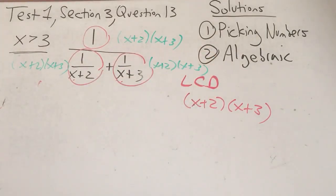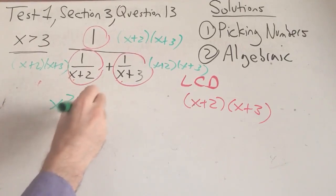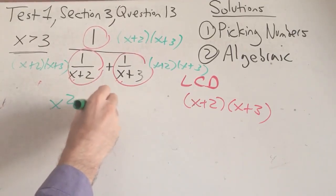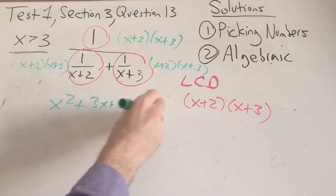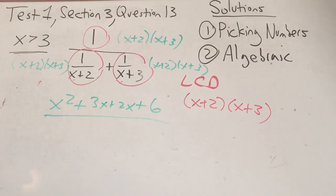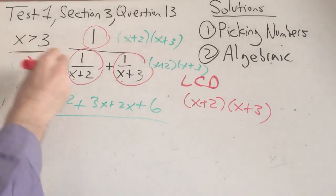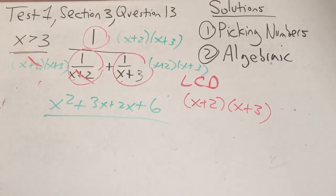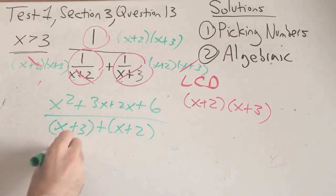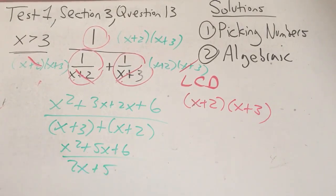On top, if we multiply that out, we get x squared plus 3x plus 2x plus 6. And on the bottom, we have some cancellation here. The (x+2)s cancel there. The (x+3)s cancel there. And we are left with (x+3) plus (x+2). Combining like terms, we have x squared plus 5x plus 6 over 2x plus 5.